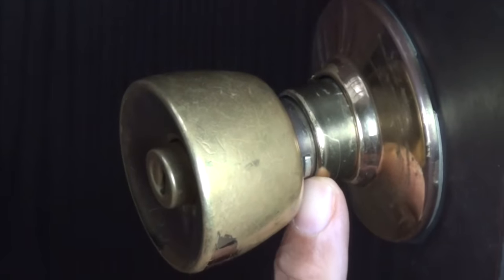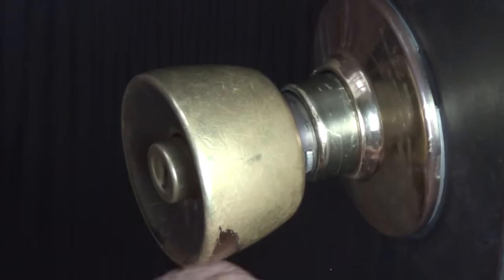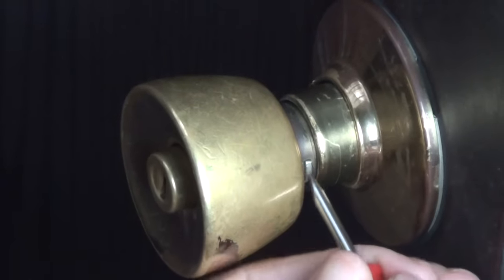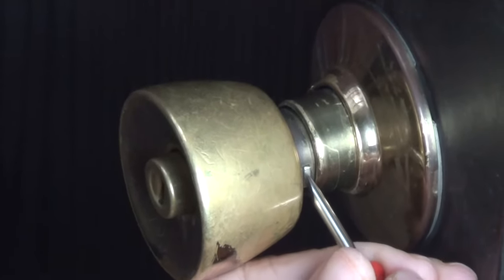Can you see that? We're going to take our little tiny slotted screwdriver and depress this button here. That's going to allow us to pull the doorknob off.